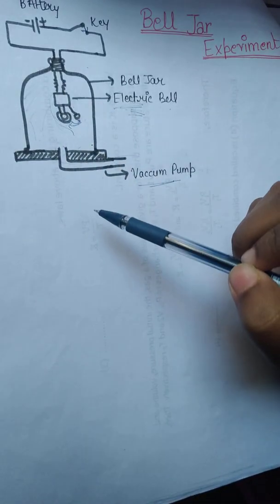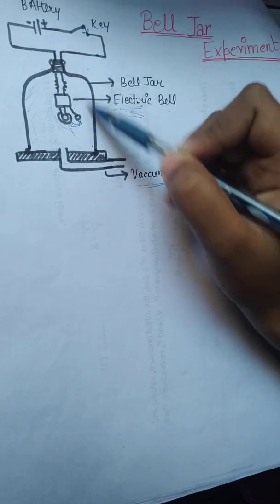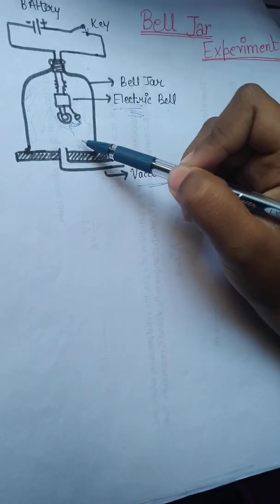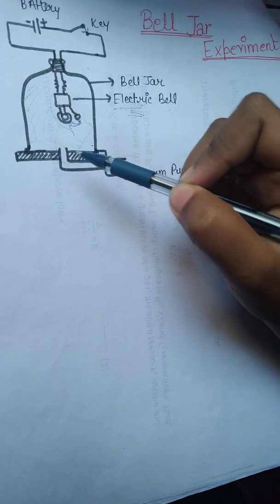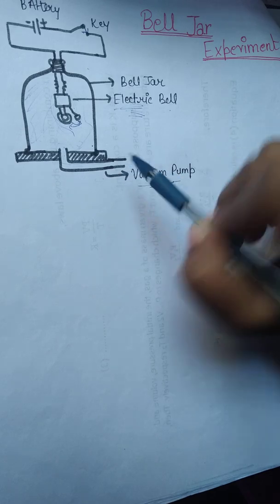So the conclusion that we can make is that propagation of sound cannot happen without a medium. Here the air that was filled in this bell jar was the medium, and with the help of air only we were able to hear the sound.